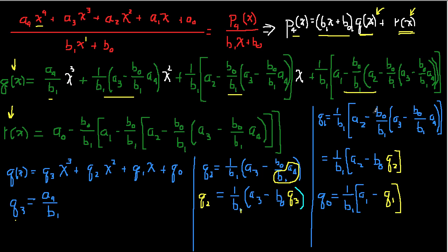Looking at q₁, given by its full expression, I notice that the chunk (1/b₁)·(a₃ − b₀/b₁·a₄) is exactly q₂. So I can write q₁ as (1/b₁)·(a₂ − b₀·q₂), expressing q₁ in terms of the previously computed q₂.